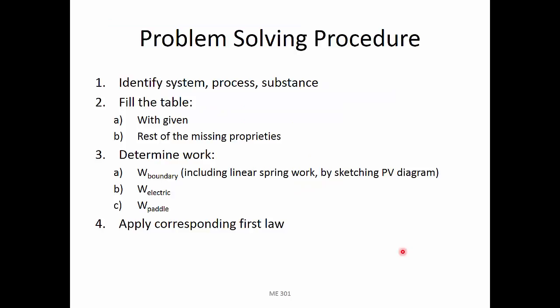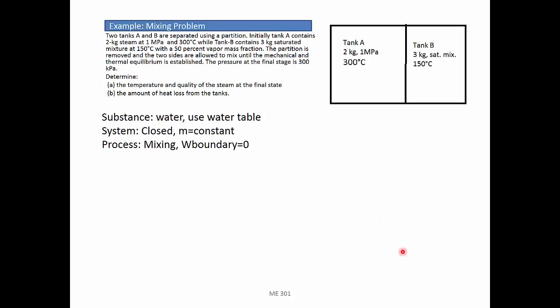We follow the same 4-step problem-solving procedure. We identify the system, process, and the substance used. Fill the table with missing properties. Determine work. Apply the corresponding first law.